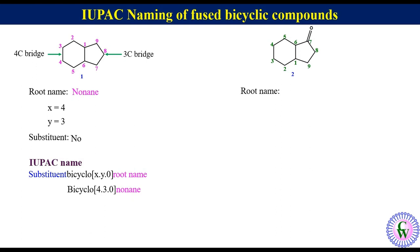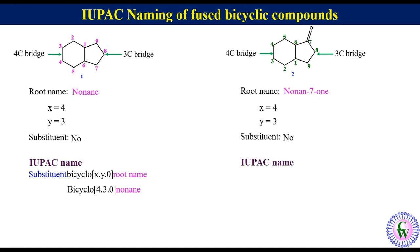Root name: there are nine carbon atoms in the ring with a keto group at C7, so the root name will be nonan-7-one. There is a 4-carbon bridge and a 3-carbon bridge, so x is equal to 4 and y is equal to 3. There is no substituent. The IUPAC name is bicyclo[4.3.0]nonan-7-one.